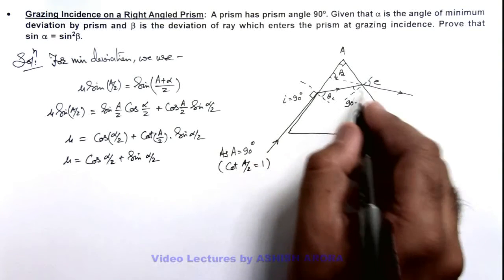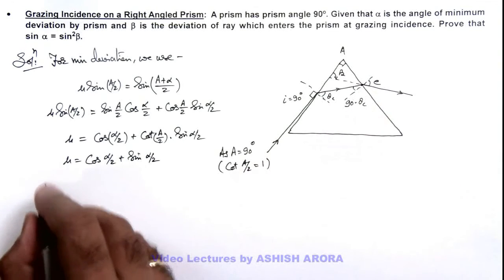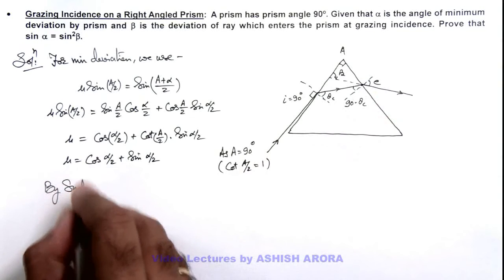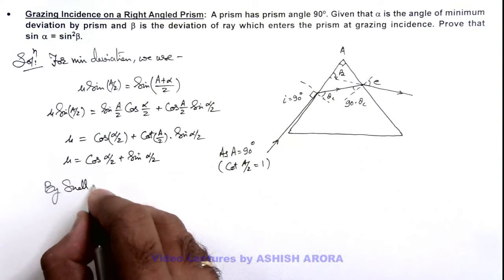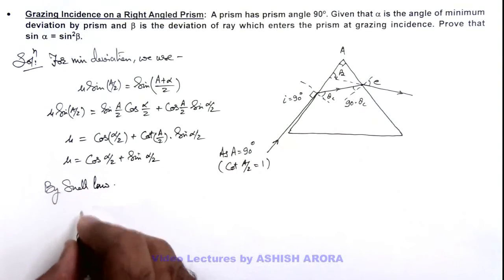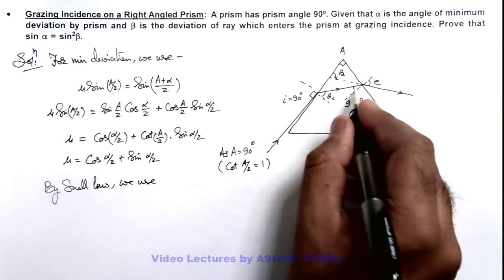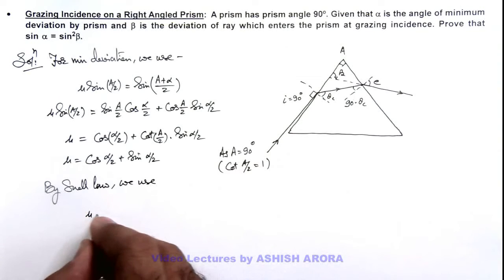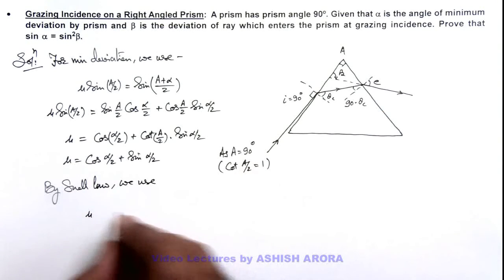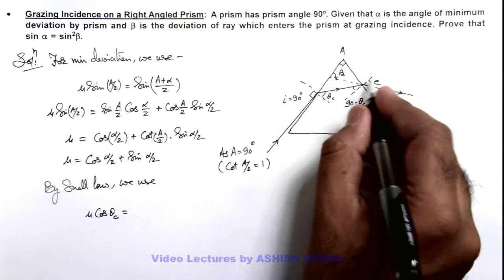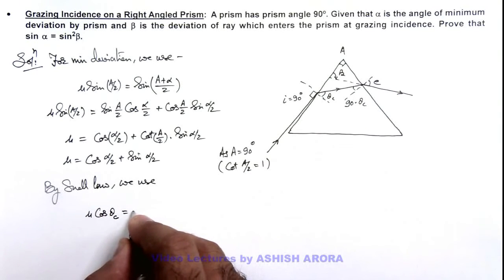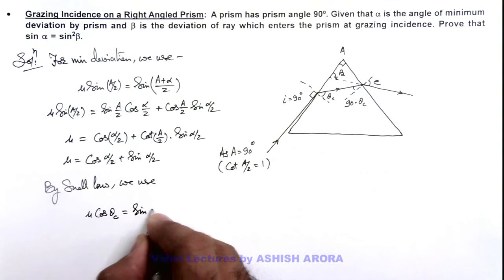And here if we apply Snell's law at the emerging face of light, here we can see applying Snell's law we use the sine of 90 minus theta c multiplied by mu, that is mu cos theta c is equal to emergence angle, 1 sine of e.